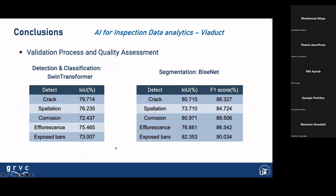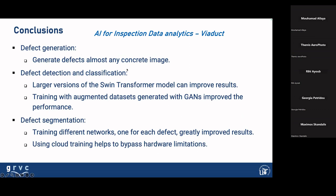As a conclusion, this has been validated on quality assessment in real bridges like Rio Verde and Alora. For detection and classification, we used the Swin Transformer, and for segmentation, we used BiSeNet with very good Intersection over Union and F1 scores — greater than 97%. For defect generation, we generated defects on concrete images using CycleGAN. Training with the augmented dataset generated with CycleGAN improved performance. Training different networks — one for each defect — generally improved results. Using cloud computing helped significantly.